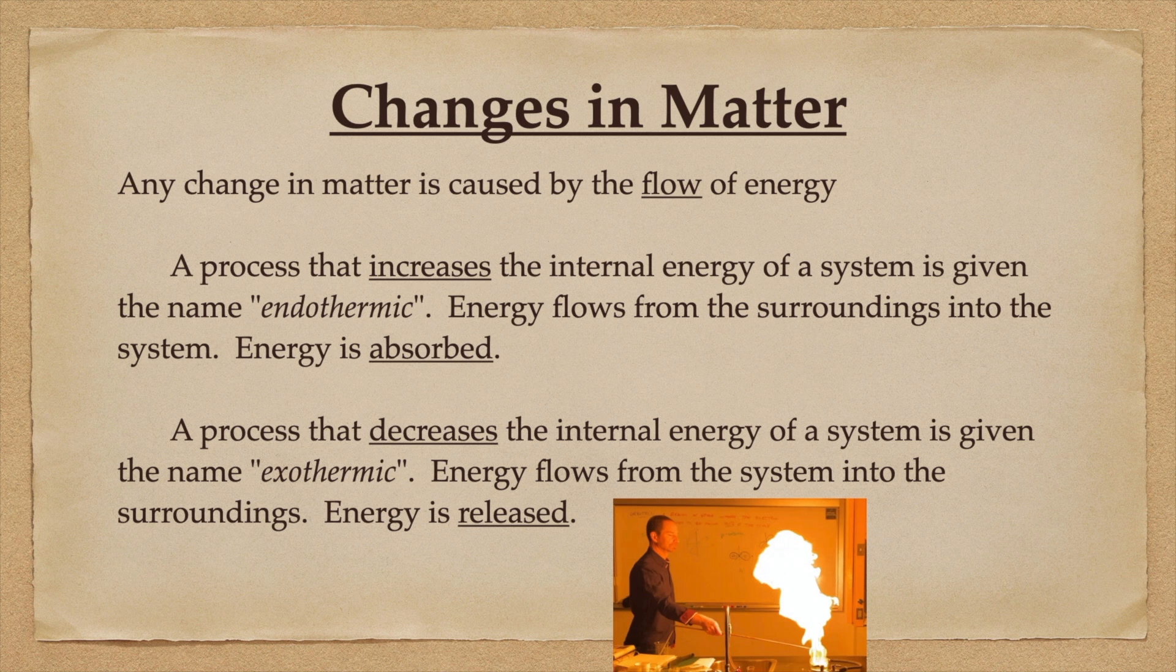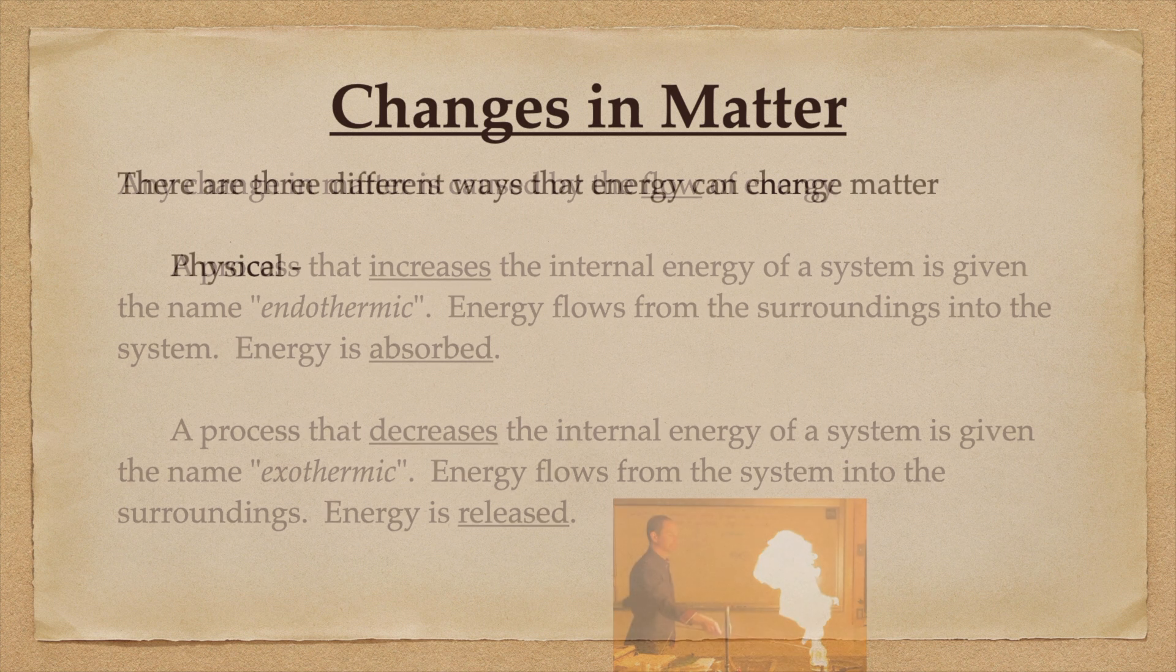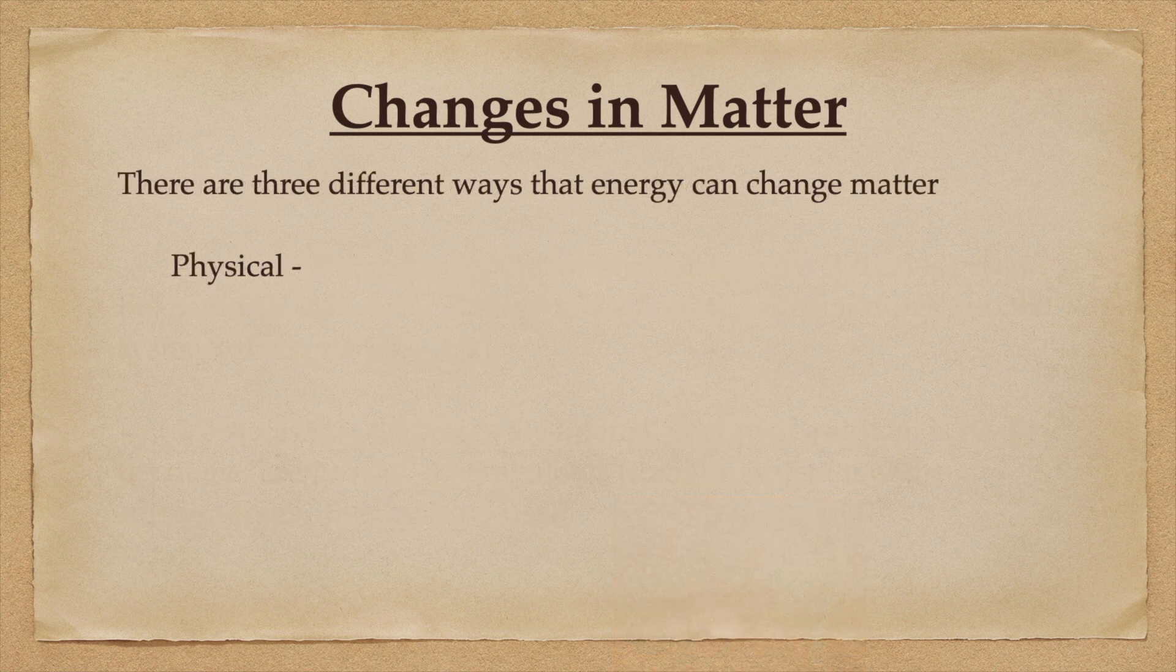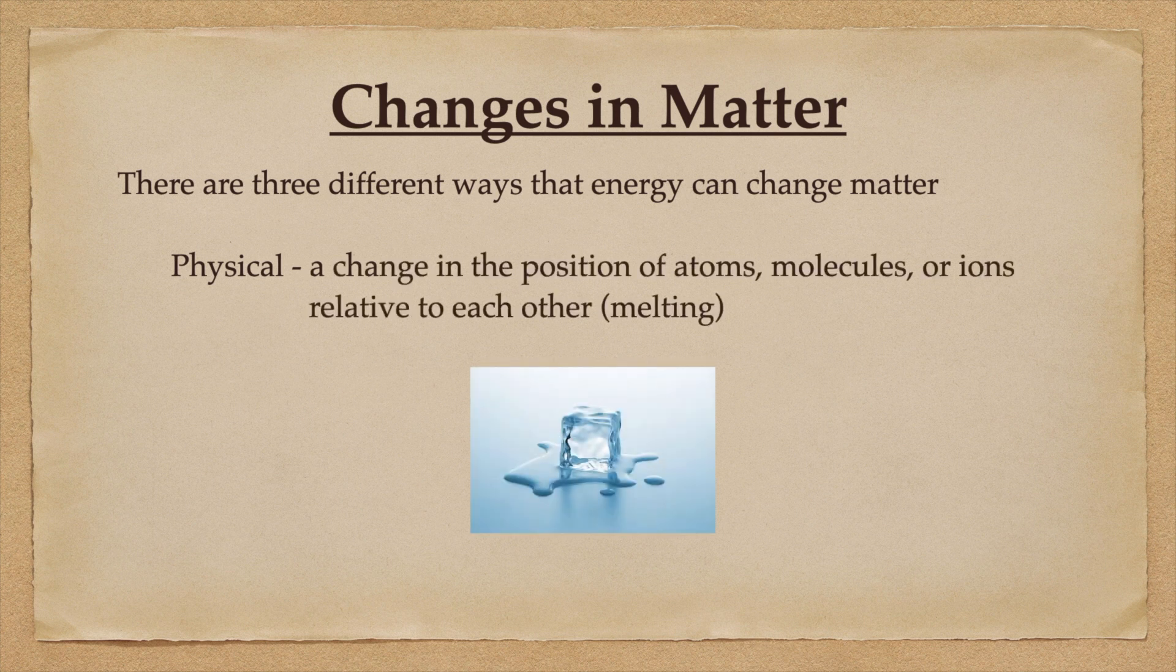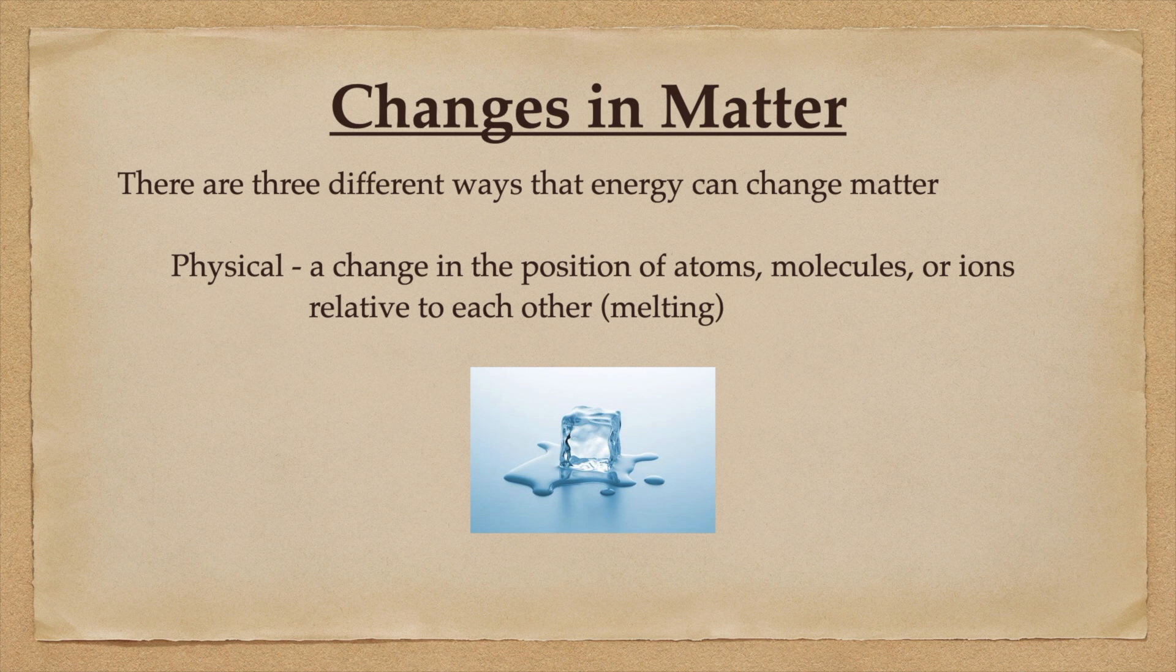Matter can change in three different ways. It can be a physical change, chemical change, or nuclear change. A physical change is a change in the position of atoms or molecules relative to each other. A good example would be melting an ice cube.